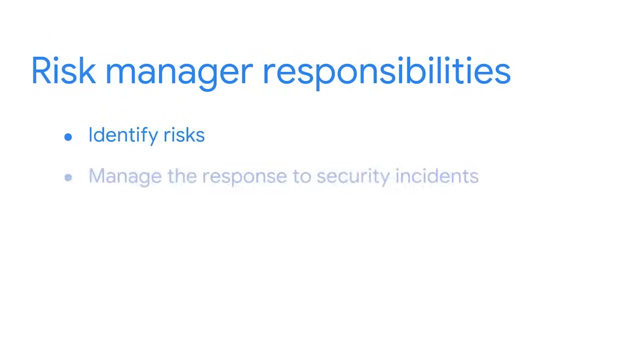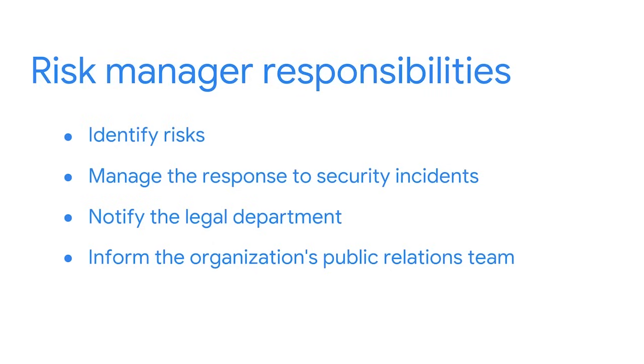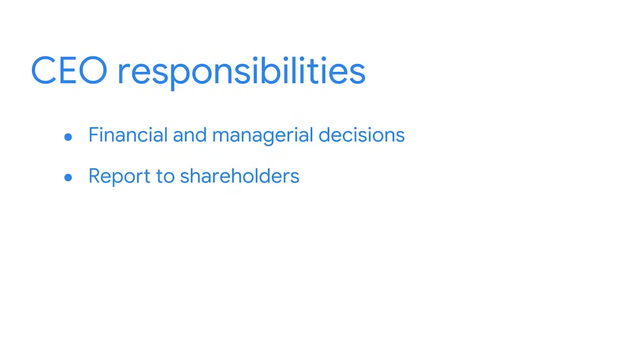Risk managers are important because they help identify risks and manage the response to security incidents. They also notify the legal department regarding regulatory issues and inform the public relations team in case there is a need to publish public communications regarding an incident. The chief executive officer, or CEO, is the highest ranking person in an organization. CEOs are responsible for financial and managerial decisions, have an obligation to report to shareholders, and manage the operations of a company, so security is a top priority for the CEO.